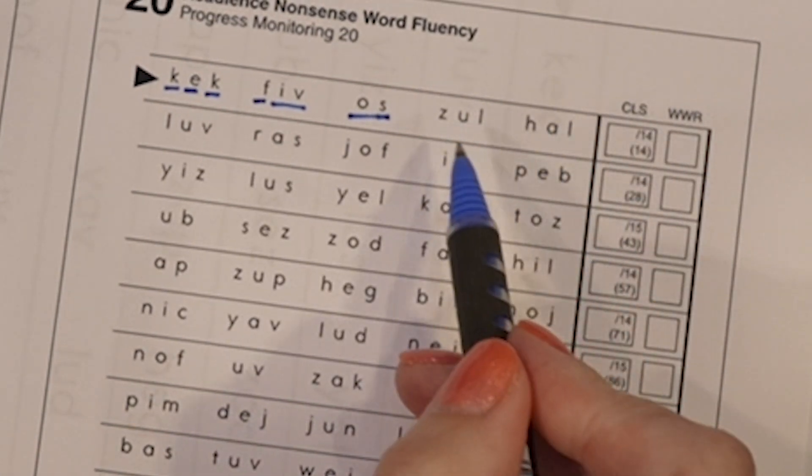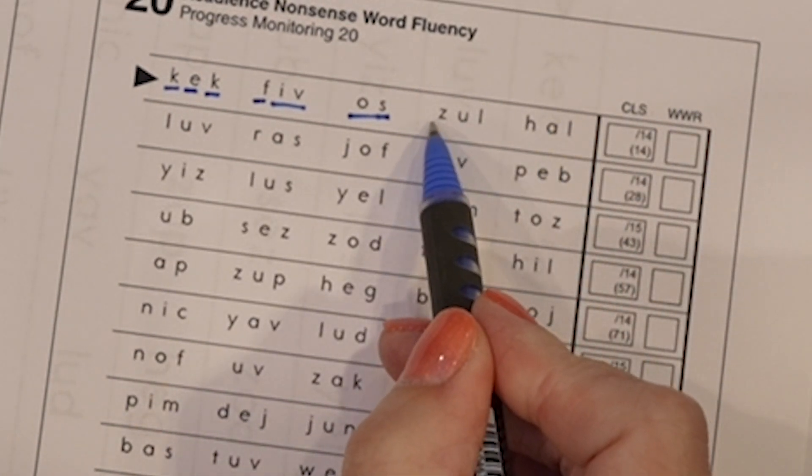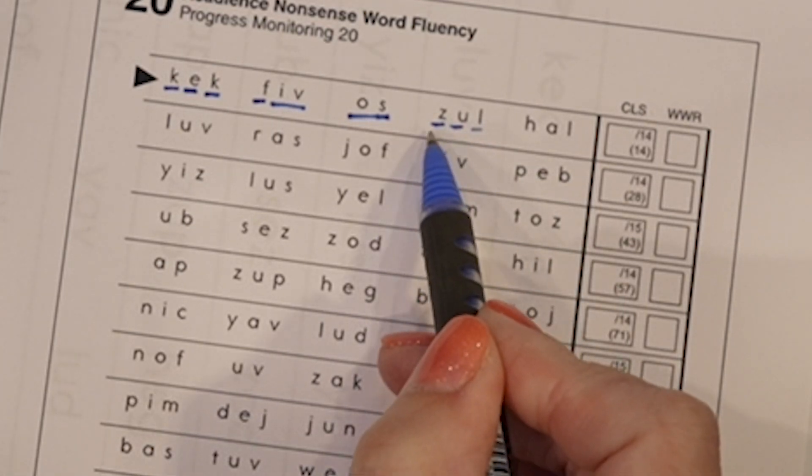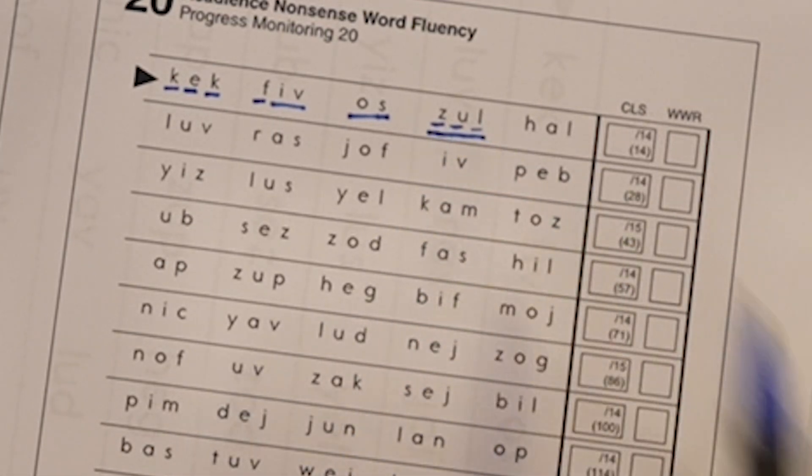Sometimes the student will first read it separately, Z-U-L, and then go back and say it as a whole word. ZUL.